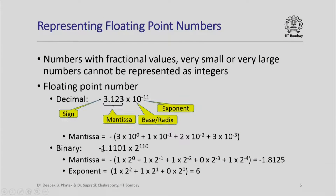We are going to have a bit for the sign, we are going to have the mantissa represented as a sequence of 0s and 1s, and we will have to agree on where to put the radix point. The base will always be 2 since we are talking about binary representation, and we will have the exponent which will be another binary number.